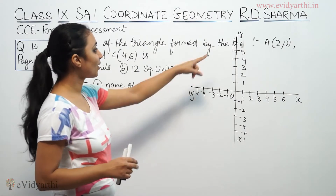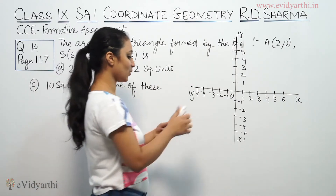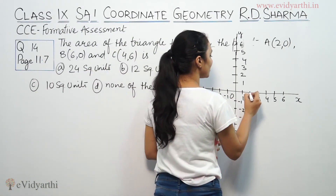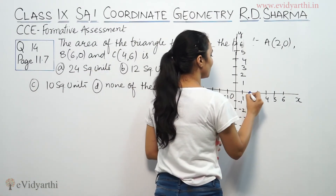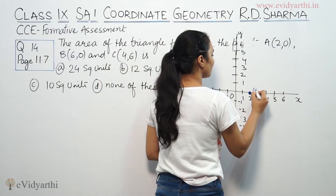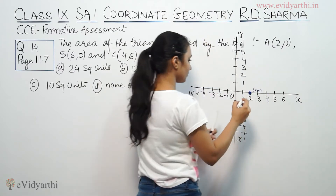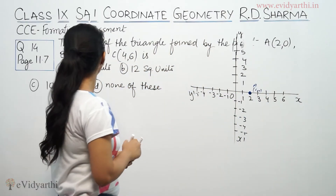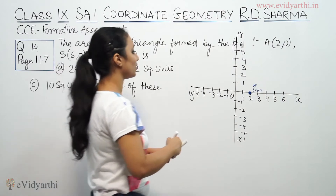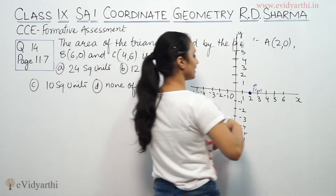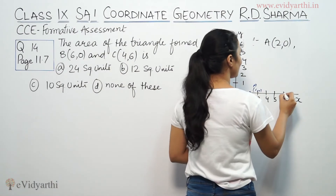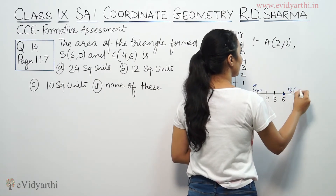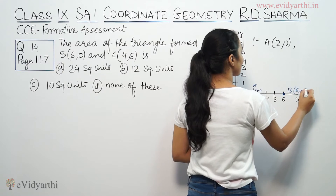The first point is A(2,0) — x is 2, y is 0, so that means this point here. This is A. The second point is B(6,0) — 6, 0 means this is the point, this is B.